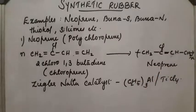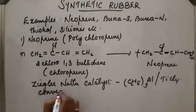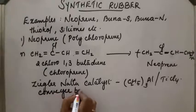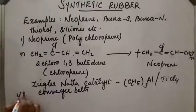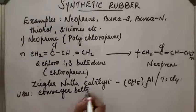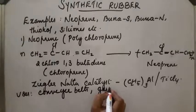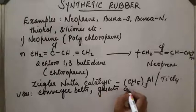This is a homopolymer. Now, its important property is it is superior resistant to vegetable oils and mineral oils. And its main use is it is used for manufacturing conveyor belts, gaskets and hoses.